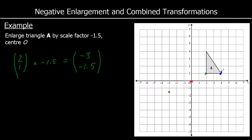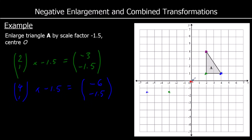I'll have a blue point, which at the moment is at (4, 1) from the centre. I'm going to multiply that by minus 1.5, so that will become negative 6, negative 1.5 — so back 6, down 1.5. And the other corner of the triangle: to get there from the centre I go right 2, up 4 — so (2, 4) times minus 1.5 gives negative 3, negative 6 — so back 3, down 6.